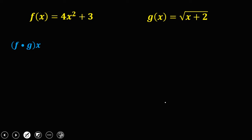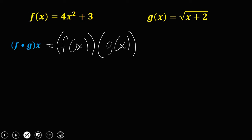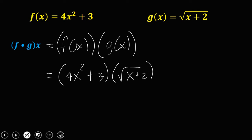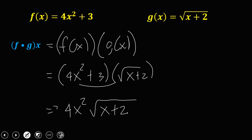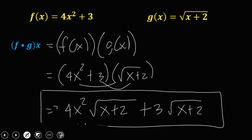For f(x) times g(x), substitute the values: (4x² + 3) times √(x + 2). Distributing, that's 4x² · √(x + 2) plus 3 · √(x + 2). Since we cannot simplify further, this is our final answer.